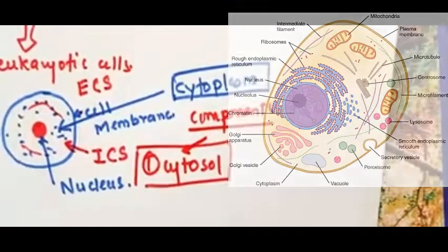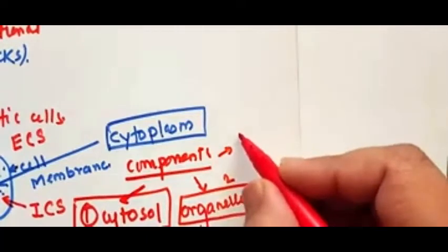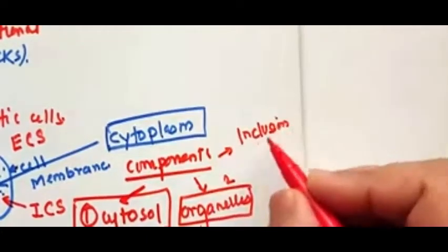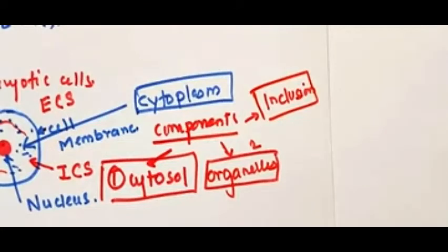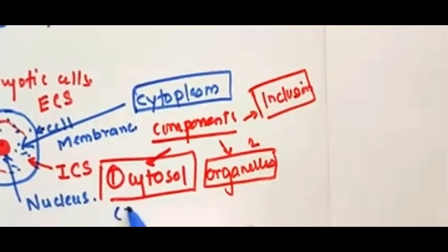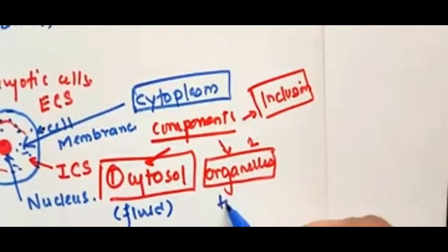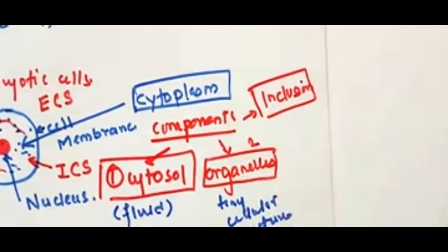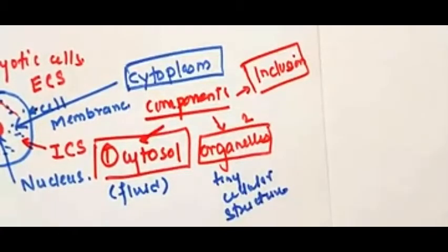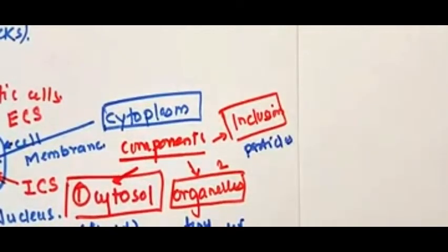The second component present in the cytoplasm is the organelles — tiny cellular structures required for the functions of the cell. The third component is the inclusions inside the intracellular space, also called cytoplasmic inclusions — tiny little particles within the cell membrane.